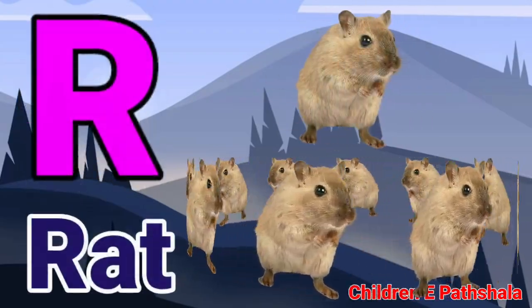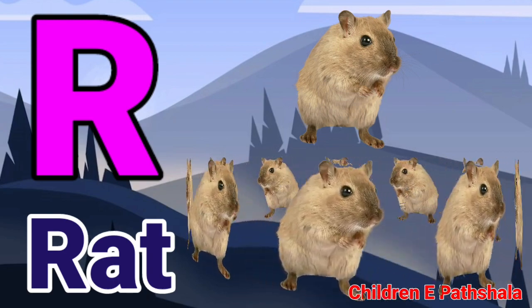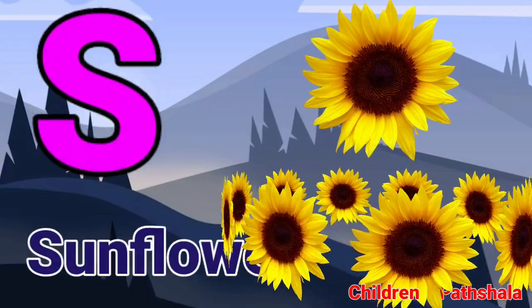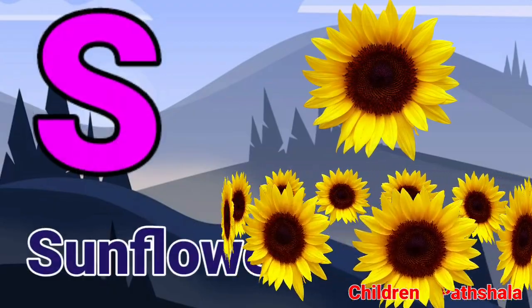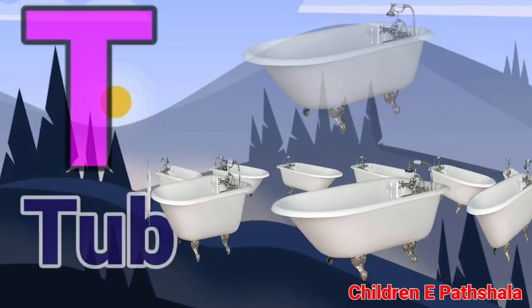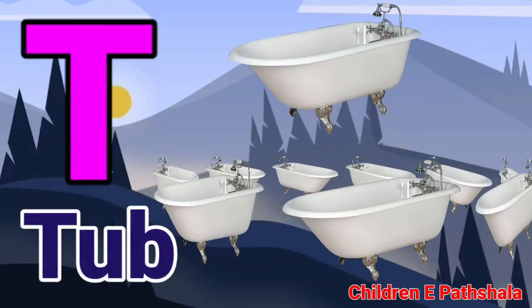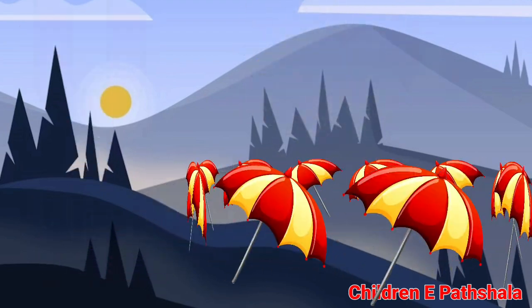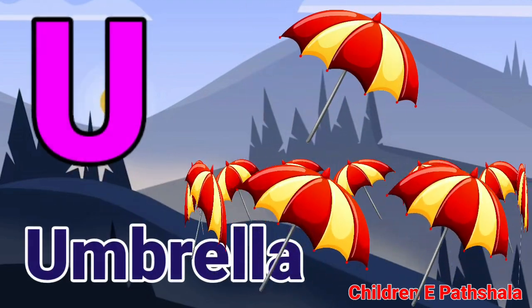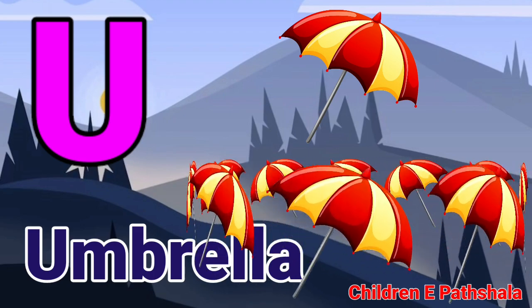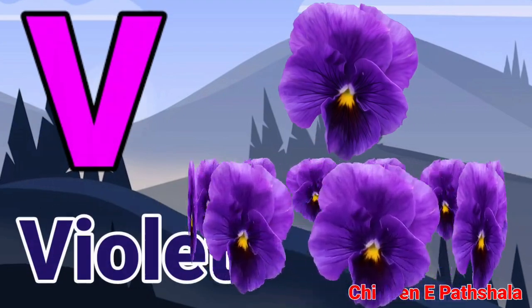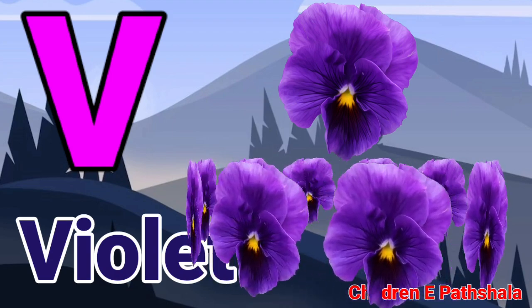R for Rat, S for Sunflower, T for Tube, U for Umbrella, V for Violet.